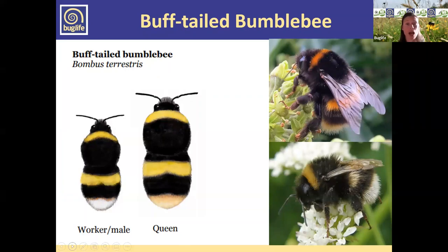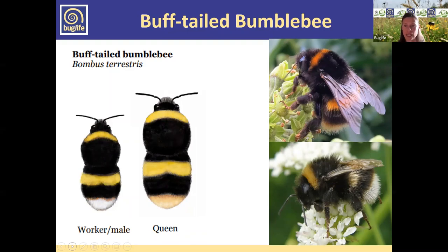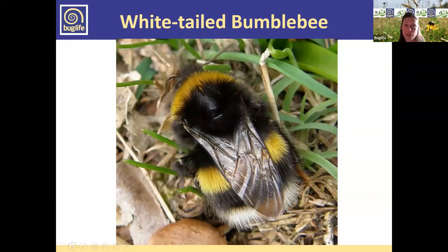The workers are similar to the queen but their tails can be a much cleaner white — sometimes a bit buffish — and they are smaller. The males are similar to the workers in this species and difficult to tell apart, which is one for a more advanced webinar. Generally it's just safe to say they're difficult to tell apart.